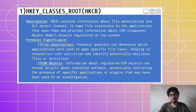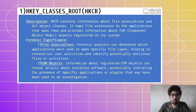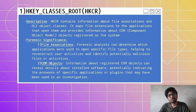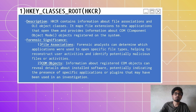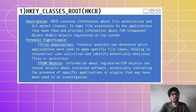Its forensic significance: first, we'll get the file association — we'll get to know how many and which types of files are present in the particular suspected system. We'll also get to know about COM objects. COM objects are Component Object Models, which contain information about installed software — like what software I installed for image manipulation, on what date, at what time, how I used it — all this will be stored in HKCR.